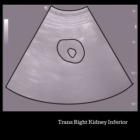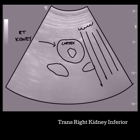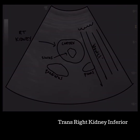A big mistake a sonographer can make is not moving all the way through the renal parenchyma during their sweep. The inferior poles of each kidney can be connected in what's called a horseshoe kidney, or exophytic cysts may be present. This image does not have major landmarks other than the presence of the inferior pole.